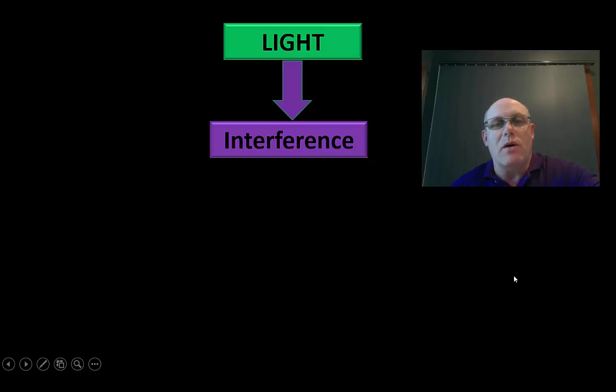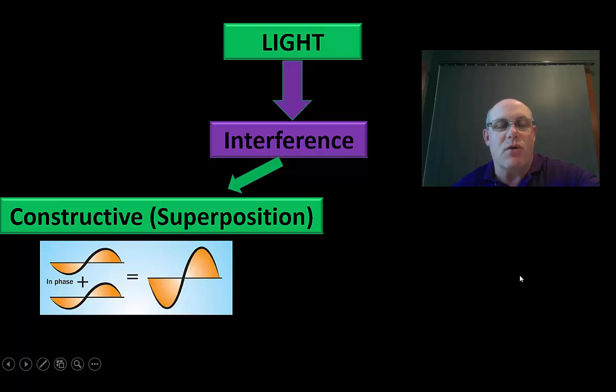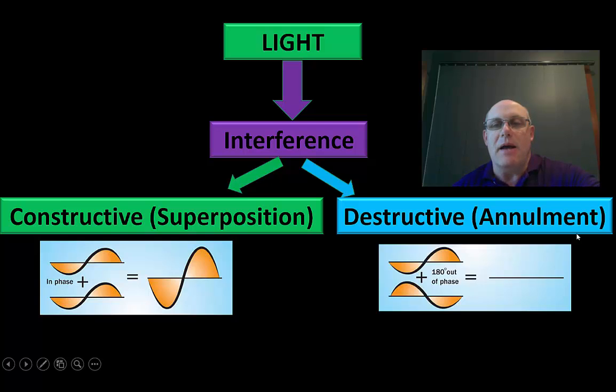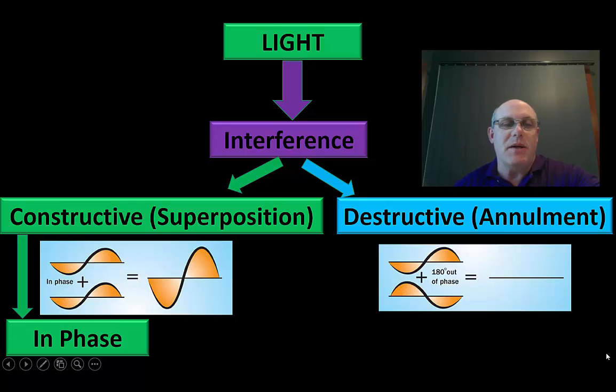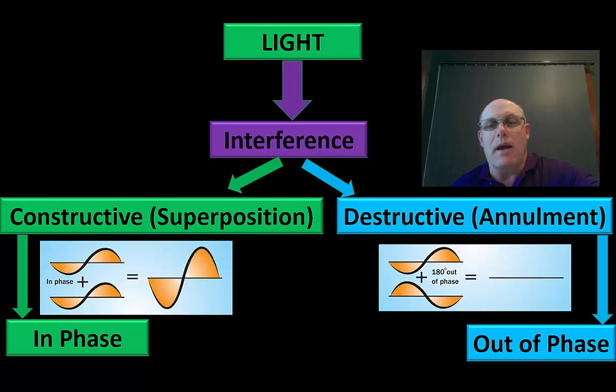Light has the ability to interfere with each other. It can constructively interfere, or we call that superposition, or it can destructively interfere with each other. For constructive interference, we have to have these two waves in phase, and for destructive interference we have to have them out of phase.